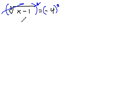Clear the odd index of 3, we get x minus 1 equals negative 4 cubed is negative 64.